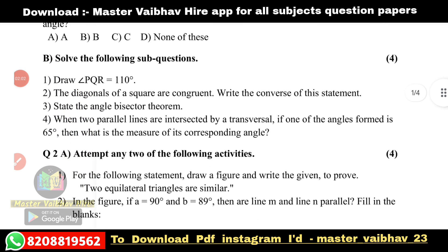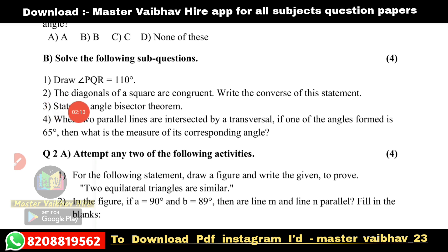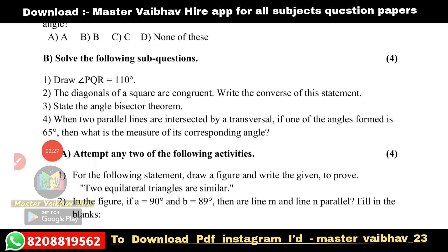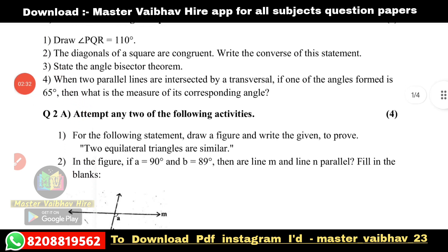Now solve the following questions. We have been asked: draw angle PQR equal to 110 degrees. Write the converse of the statement that the diagonals of a square are congruent. State the angle bisector theorem. When two parallel lines are intersected by a traversal, if one of the angles formed is 65 degrees, then what is the measure of its corresponding angle?